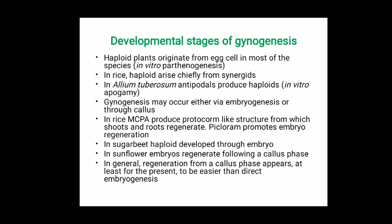Gynogenesis may occur either via embryogenesis or through callus. In rice, MCPA produces protocorm-like structures from which shoots and roots are regenerated. Similarly, another auxin, picloram, promotes embryo regeneration from the ovary. In sugar beet, haploids are developed through embryo. In sunflower, embryos regenerate following the callus phase. In general, regeneration from the callus phase appears to be easier than direct embryogenesis.